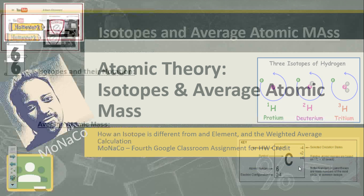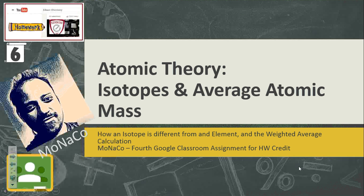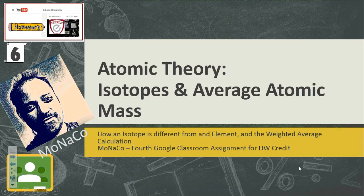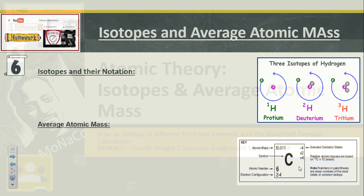Hello, Monaco here. We're going to hit up our 6th homework lecture on atomic theory, covering isotopes and average atomic mass. The focus question is how is an isotope different from an element, and this weighted average calculation involves some mathematics. You'll have a Google Classroom assignment to follow it all up.